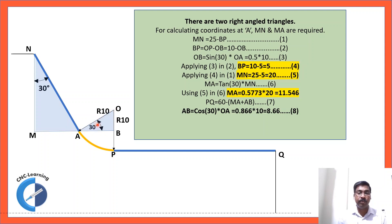MA we have already calculated here which is 11.546 and AB is we need to calculate from this right angle triangle. Okay. Cos 30 if you see it is AB divided by 10. So, cos 30 into OA that will give you AB. So, 0.866 is the value of cos 30 multiplied by 10. And then you will get 8.66.